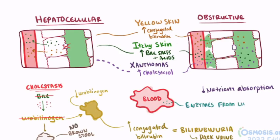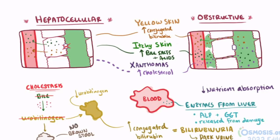Enzymes usually found in the liver, like alkaline phosphatase (ALP) and gamma-glutamyl transpeptidase (GGT), may also be found increased in the blood. Both of these are membrane-bound enzymes that are sensitive to hepatocyte damage and can be released when hepatocytes are damaged or stressed. These signs of cholestasis, whether from obstructive or hepatocellular causes, are super important to recognize so that the underlying cause of reduced bile formation or flow can be found and the right treatment can be given.